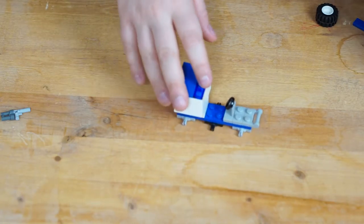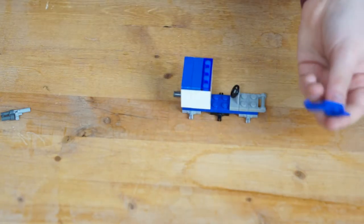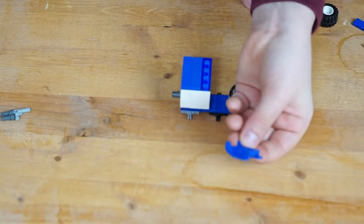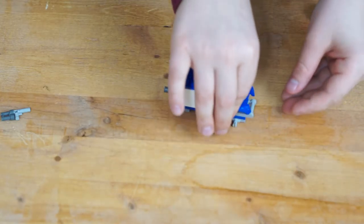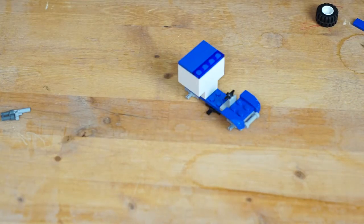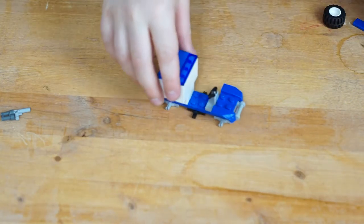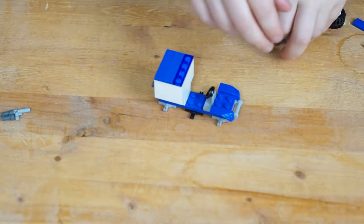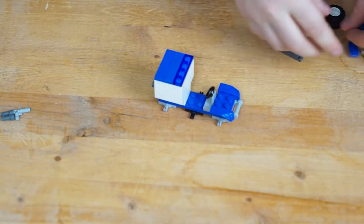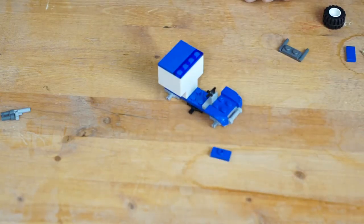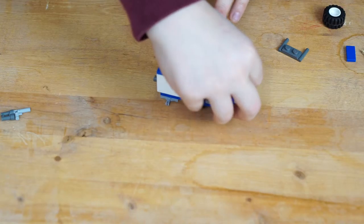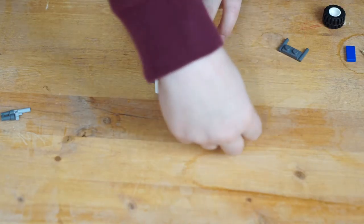Then you grab this, doesn't matter what color. It's like a car thing, put it on the front. We're not adding the wheels yet. Then we put a two with a one hooker right there, whatever you want to call it, and then plop it on.